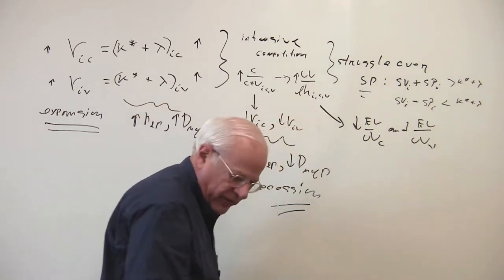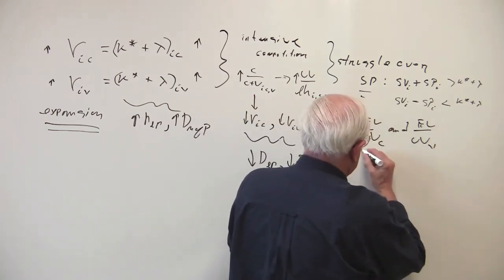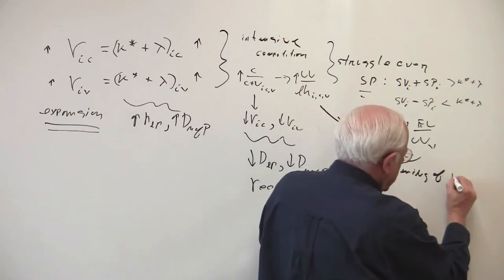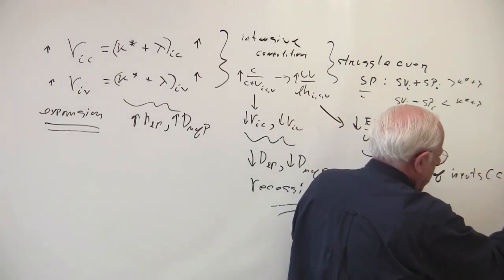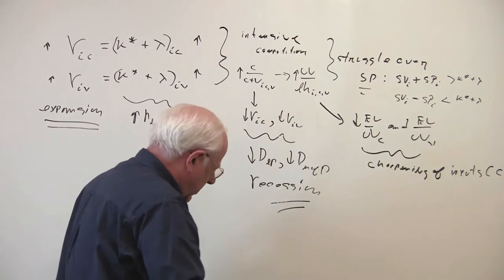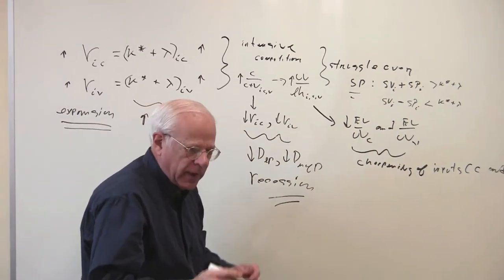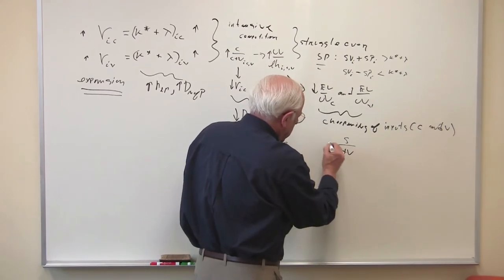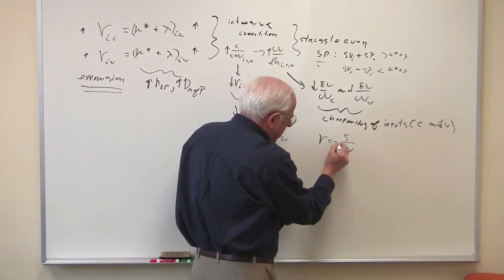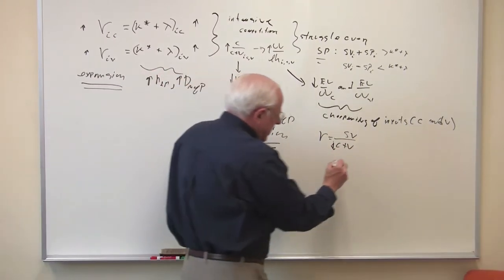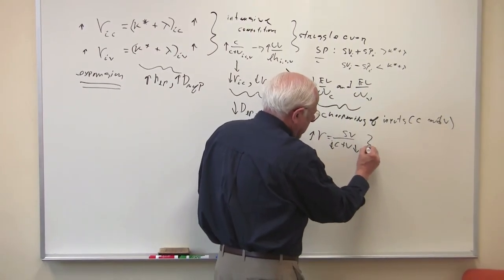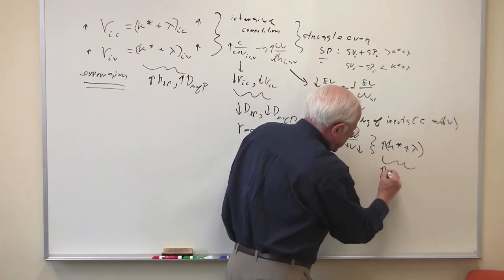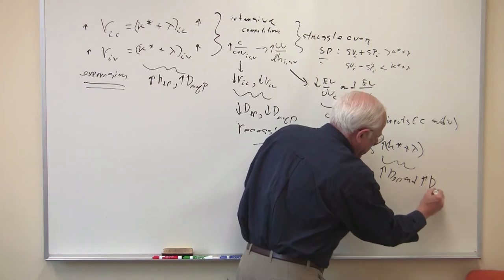So capitalism on the one hand is driving the economy down because of expansion. On the other hand, this cheapening of C and V is going to push the economy up into an expansion. The cheapening of inputs is going to drive the economy into an expansion because the rate of profit is S over C plus V, and you are driving down the cost of C and V, driving up the rate of profit and increasing K-star plus lambda.